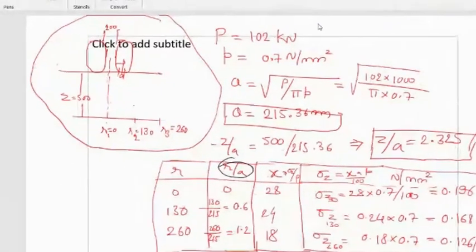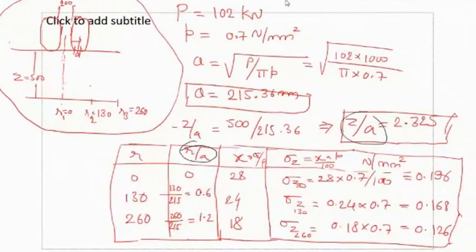For different R by A and Z by A. Z by A is constant 2.3 and R by A is varying 0.0, 0.6, 0.1, 0.2. For those different values we found, there I had mentioned 6, similarly 28, 24, 20. Then you have multiplied and got these stress values.